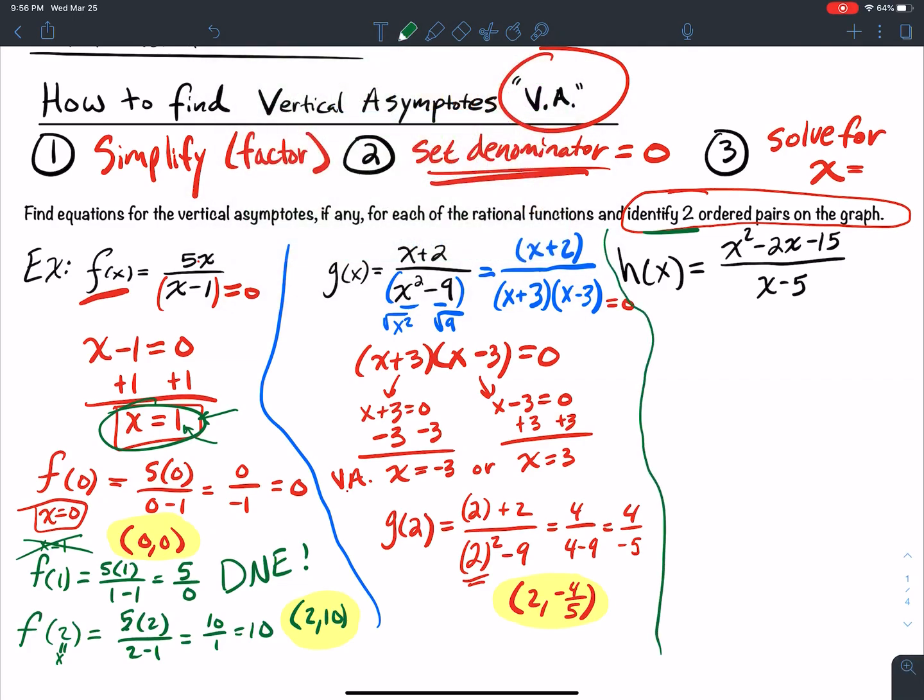I'll leave you to do another one. Just pick an x value that's not negative 3 and not 3, so maybe try to calculate g of 1.